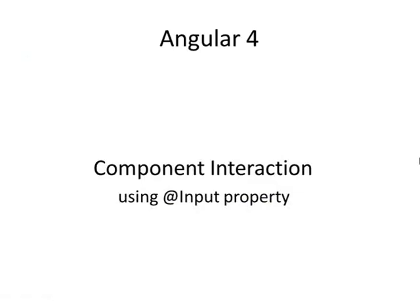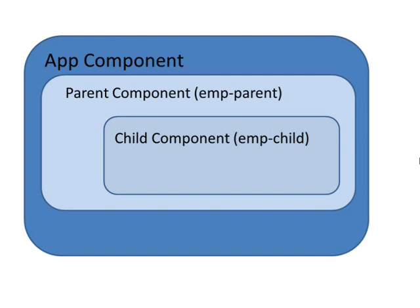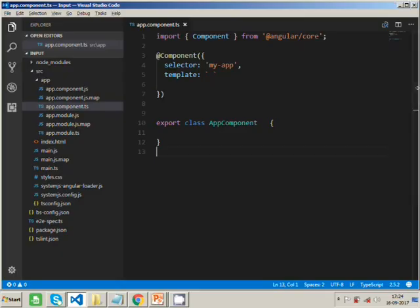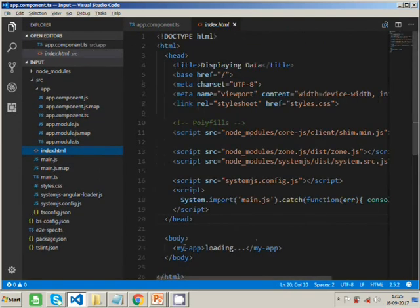In this tutorial we'll see component interaction using the input property. We have three components: the app component, parent component, and child component. The app component will host the parent component named mparent, and mparent will call the child component named mchild and pass data into it. We're using the Angular 4 quick start project, where index.html has the my-app component.